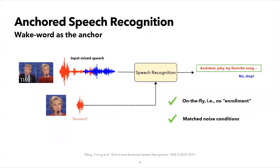An alternate strategy is that of anchored speech recognition with wake words. If we assume that the device-directed speech usually starts with a wake word segment, we can use this segment to extract the characteristics of the target user, and then transcribe only the relevant speech in the mixture. This strategy has the dual advantages of being on the fly and also containing matched noise in the auxiliary segment, which cannot be guaranteed when using an enrollment utterance.